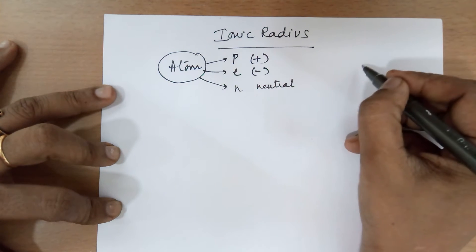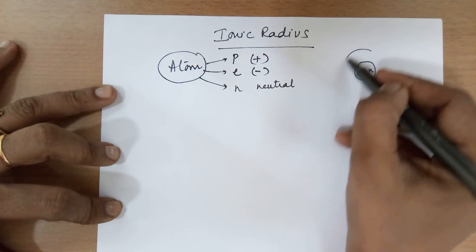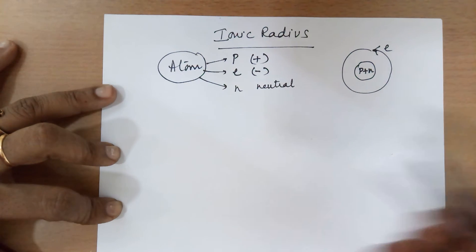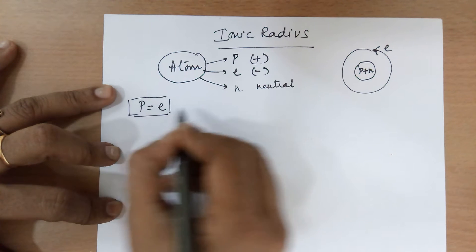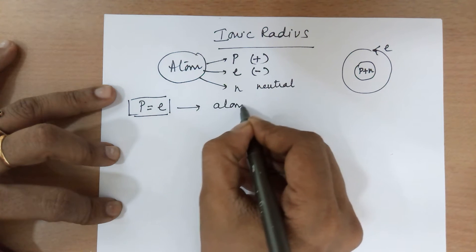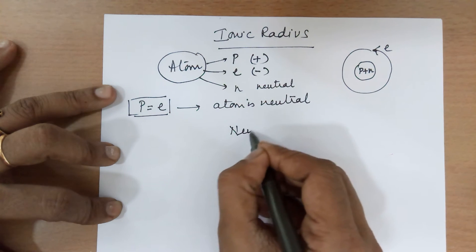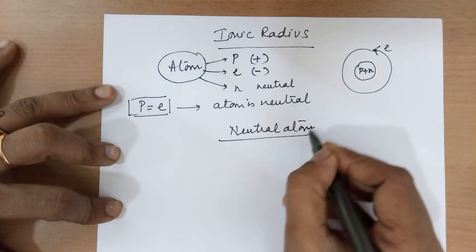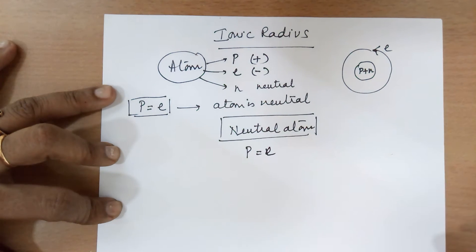In an atom, inside the nucleus you have got protons plus neutrons, while around the nucleus you have got electrons moving. As long as the number of protons is equal to the number of electrons, we say the atom is neutral. Hence, a neutral atom would have protons equal to electrons.